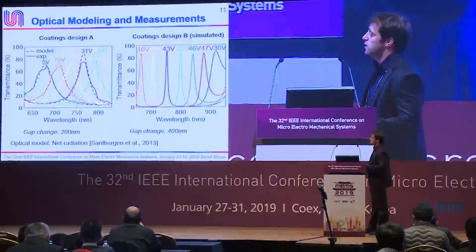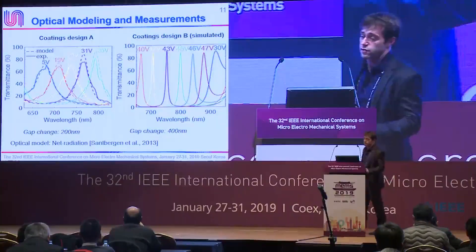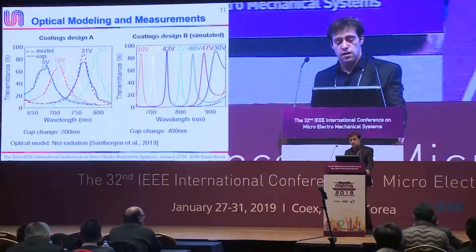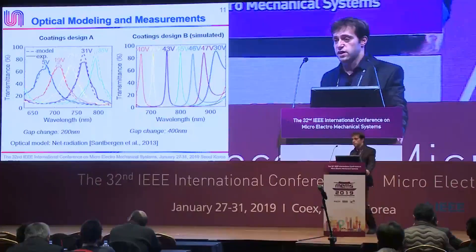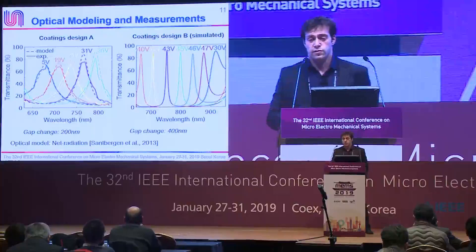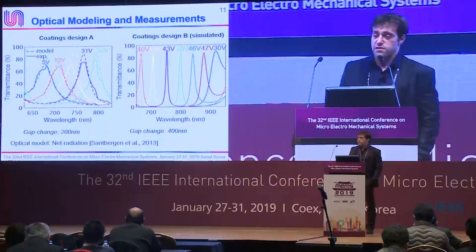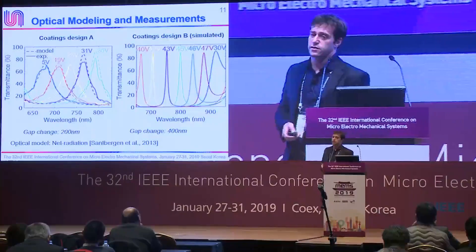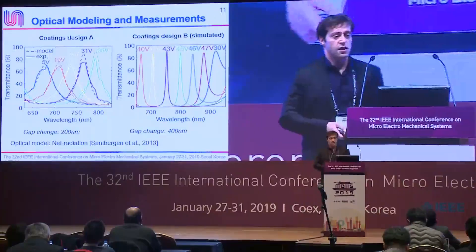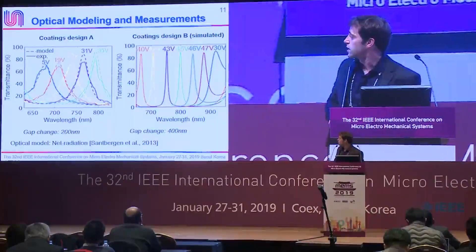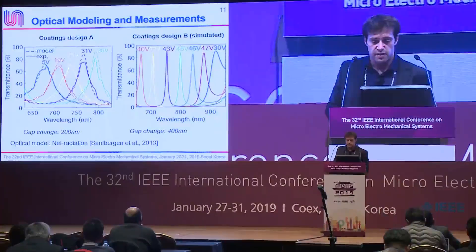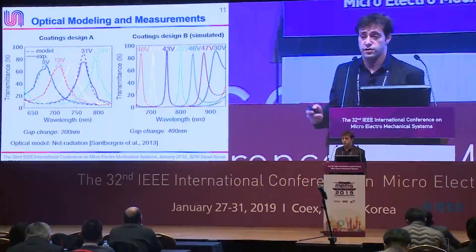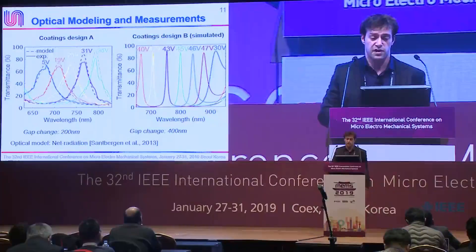The specific device was designed with an initial coatings design, shown here on the left. This figure shows the transmission spectra of the device for various activation voltages. We also compared the results to a model we developed based on the net radiation approach, and we can see a sufficiently good fit between the results. We can then conveniently apply this model to design other and better coating designs, shown here on the right, for a broader tunable range of 400 nanometers versus the 200 nanometers of the initial design.